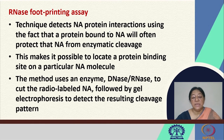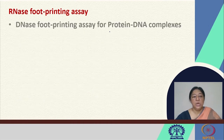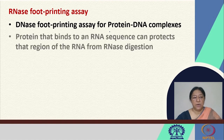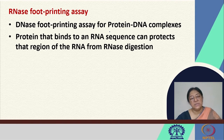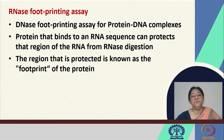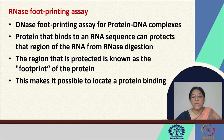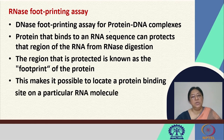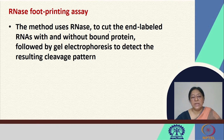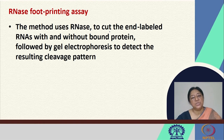The footprinting assay method uses the enzyme — DNase or RNase — to cut radio-labeled nucleic acid. The process involves the interaction of the nucleic acid with a protein; the complex is then cleaved with DNase or RNase. If there is a protein-nucleic acid complex, it will be protected from cleavage. The DNA footprinting assay is used for protein-DNA complexes and the RNA footprinting assay for protein-RNA complexes. The protected region is known as the footprint of the protein.